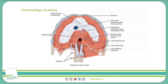This is an inferior view of the diaphragm, looking at the underside of the diaphragm from the abdomen. As you can see, there are three openings in the diaphragm that allow structures to pass from the thorax into the abdomen. The location of these openings, especially in relation to the vertebrae, are very important.